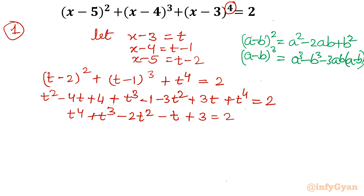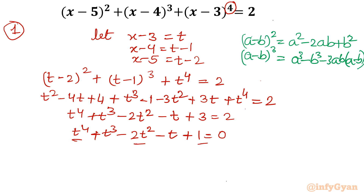Setting equal to 2 and taking all terms to the left: t⁴ + t³ - 2t² - t + 1 = 0. Now I will group the first, third, and last terms together: (t⁴ - 2t² + 1) + (t³ - t) = 0.